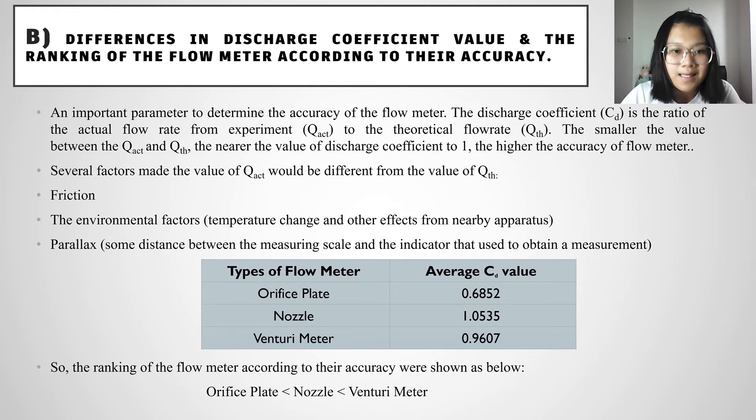First, we have the frictions. And second, we have the environmental factor such as the temperature change and also other effects from the nearby apparatus that will affect the experiment value.